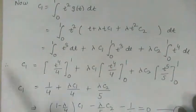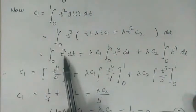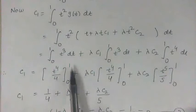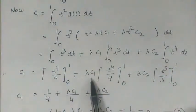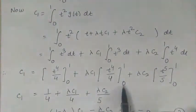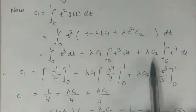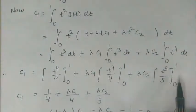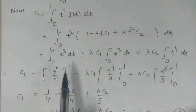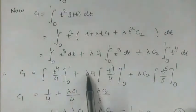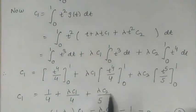Evaluating the integrals: ∫₀¹ t³ dt = [t⁴/4]₀¹, and λc₁ times [t⁴/4]₀¹, plus λc₂ times the integral of t⁴ from 0 to 1. After substituting the upper and lower limits, we get c₁ = 1/4 + λc₁/4 + λc₂/5.